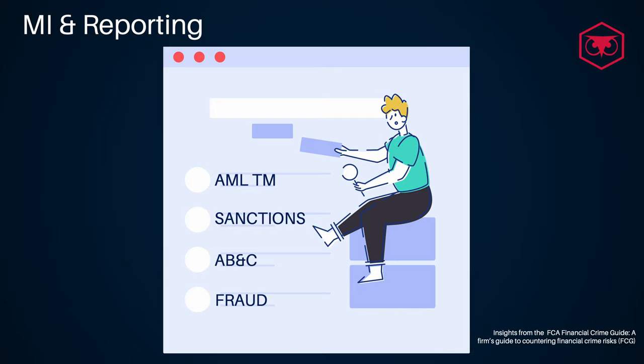MI reporting must be regularly shared with senior management and with risk forums to ensure financial crime risks are within the firm's risk appetite. The regular circulation of MI should also ensure that the right level of escalations are considered when risks are identified.